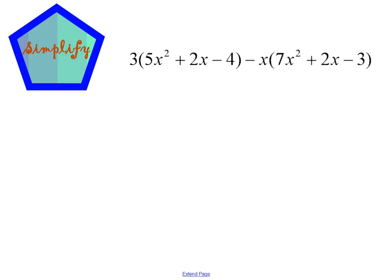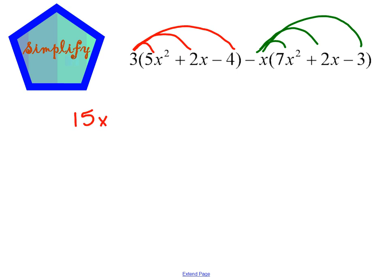This time we actually have two different distributions — our first distribution and our second distribution. So our first one: we have 3 times 5 is 15x squared. 3 times 2x is going to be 6x. And 3 times negative 4 is negative 12. Negative x times 7x squared — that's really like a negative 1 times 7 is negative 7. x times x squared is x to the third.